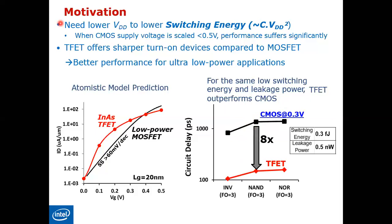We already tackled this in the first lecture about the minimum feature length — the length of the channel — and how as that channel length goes down, the technology becomes saturated and we need to search for a new architecture for the MOSFET. Some of your projects were about carbon nanotube field effect transistors, others about channel length in MOSFETs, and I believe all of you did great work. This is the main motivation for the TFET.